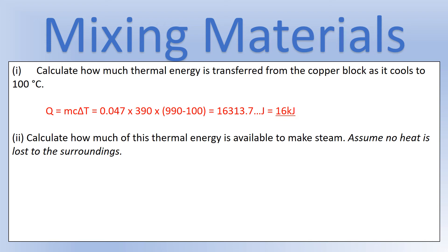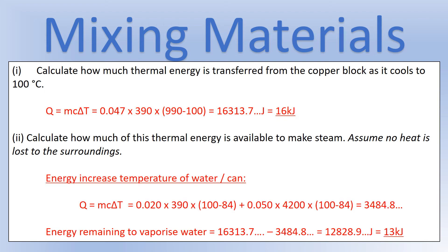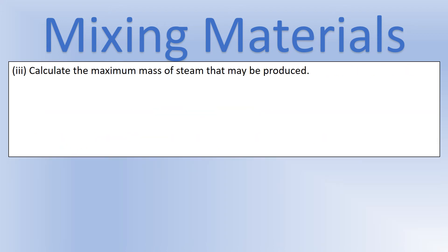Now work out how much thermal energy is available to make steam. First calculate the energy needed to raise the temperature of the water and the can, converting each mass to kilograms and multiplying by its specific heat capacity and the temperature change. The energy left to vaporize the water is the difference: 16,000 joules minus the energy required to raise the temperature. That remaining energy is what's available to change the state of the water from liquid to gas.